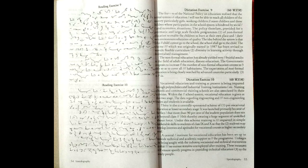Vocational education and training at present is being imparted through polytechnics, industrial training institutions, nursing schools, and commercial training schools. Within the school system, vocational education is given at plus 2 stage.